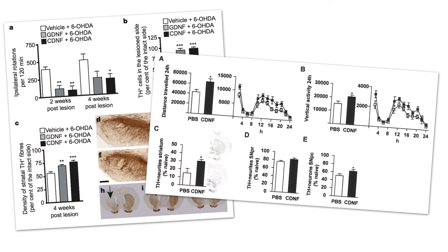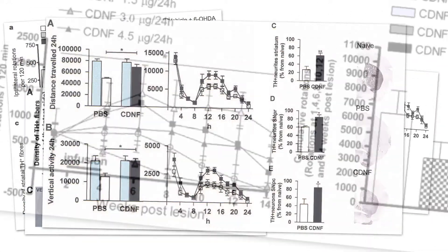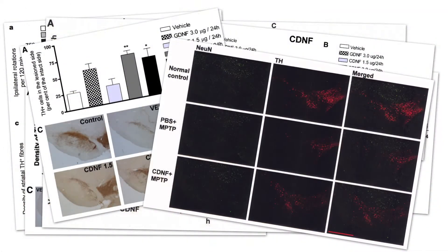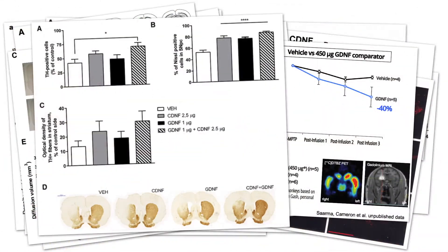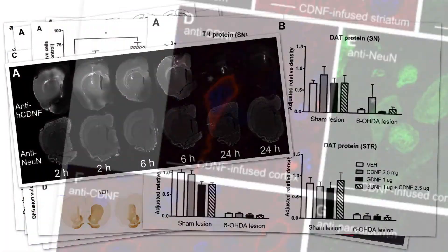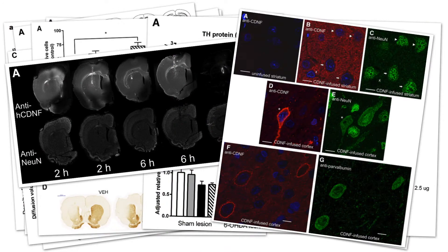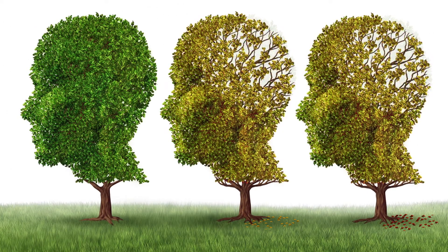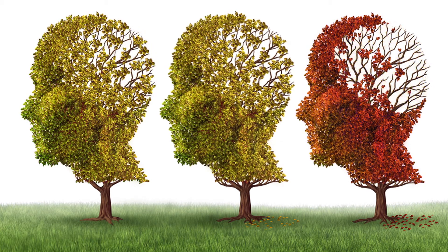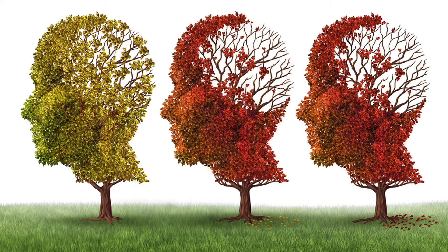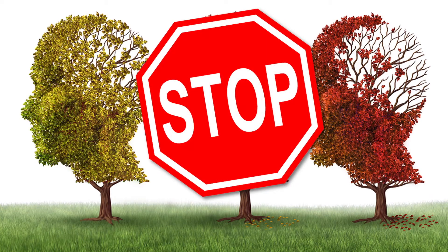Overall, the efficacy of CDNF has been shown in numerous preclinical models of Parkinson's in both genetic and toxin-based models. In those models, CDNF has stopped and even to some extent reversed the progression of the disease. If CDNF works as well in humans as it has worked in preclinical disease models, CDNF could stop the progression of Parkinson's.